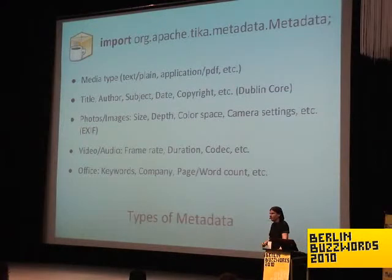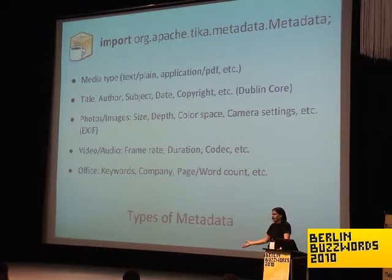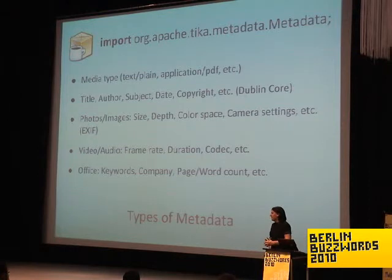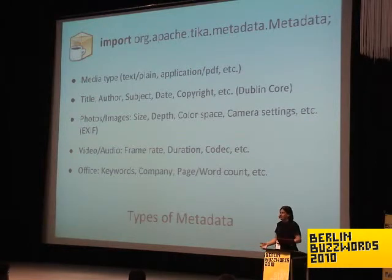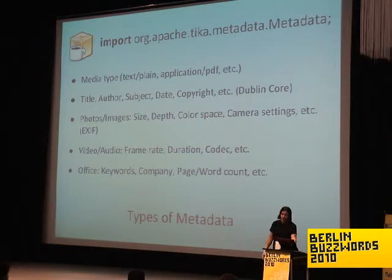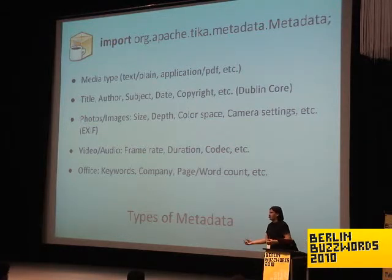We're planning to add normalization so you can use standards like Dublin Core to simplify your code. Basically, whenever there's a subject or title in a document, the output should use standard Dublin Core metadata fields. It's also possible we'll modify the metadata object to use something like XMP — Adobe's metadata format — for expressing more complex metadata information, including things like thumbnail images.